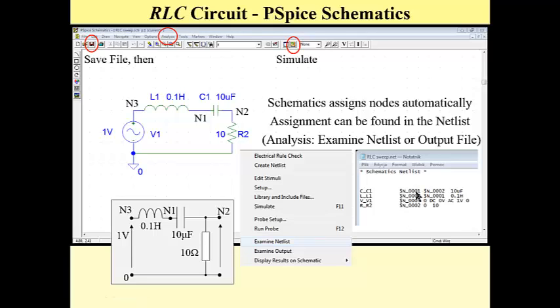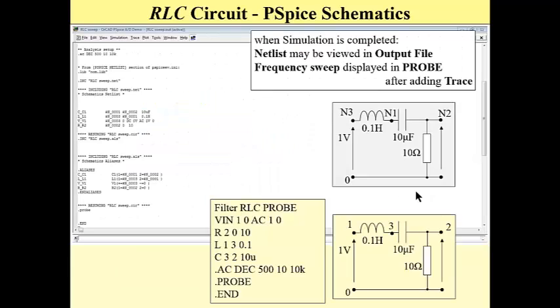If we press simulation, run simulation, then after a few seconds we have an output file and also we have a Probe window. In this Probe window, we may display trace. In this example, the circuit has a mesh current.